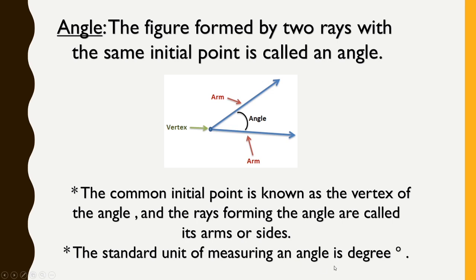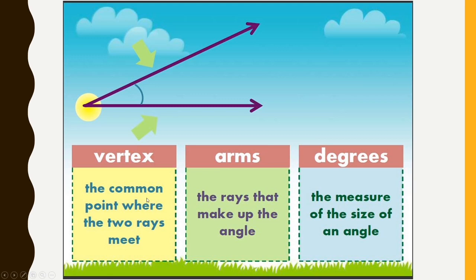The standard unit of measuring an angle is degree. Just as we measure distance in kilometers and liquids in liters, we measure angles in degrees. The symbol for degree is a small circle. The common point where the two rays meet is called the vertex, and the rays that make up the angle are called the arms.